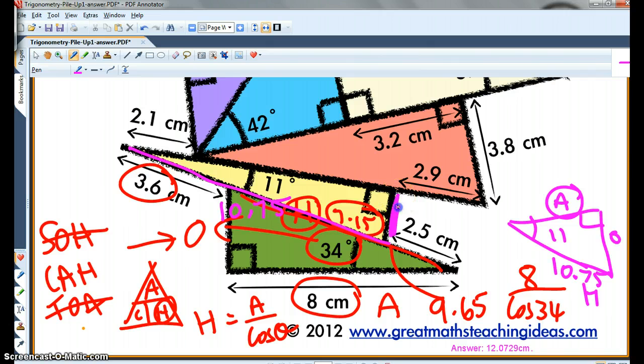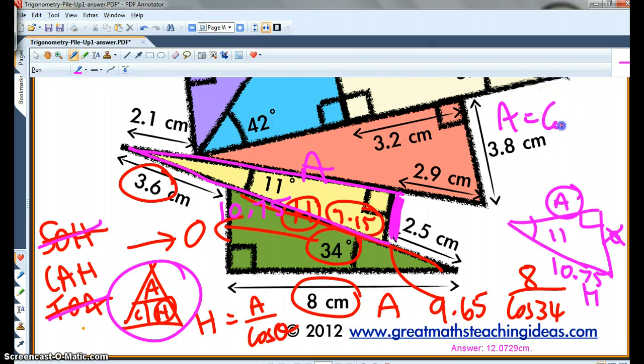I don't have the opposite. And I don't need the opposite. So again, those two don't count. And it's CAH again. But this time, I am trying to find the adjacent. So adjacent equals cos 11 times the 10.75.